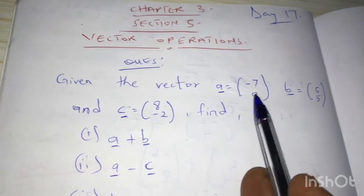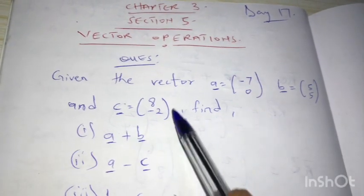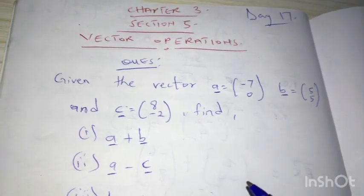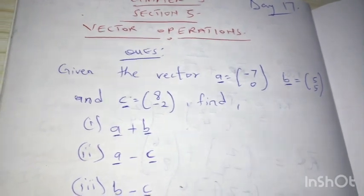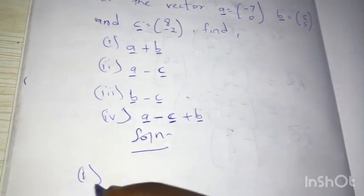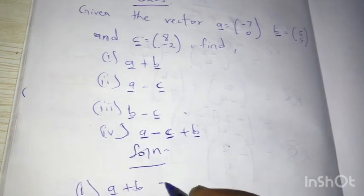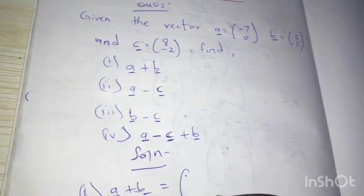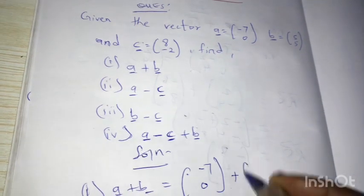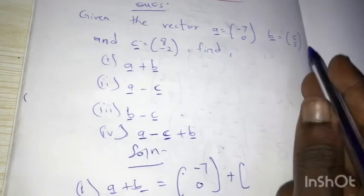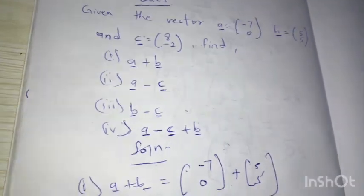Given vector a is (-7, 0), b is (5, 5), and c is (8, -2), we are asked to find: number one, a plus b. So what is a? Negative seven, zero. Plus b, which is five, five.